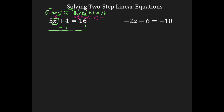When the signs are different, you subtract. 1 take away 1 is 0, so that's eliminated. I'm going to bring down my 5x because that's what's left. Over here on the right-hand side, I'm going to combine. When the signs are different, you perform a subtraction, which gives me 15. Because 16 is bigger, my answer is going to be a positive 15. I'm not finished.